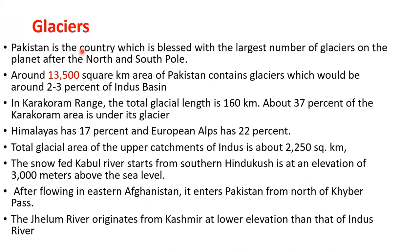The second major source is glaciers. Pakistan is one of the lucky countries that has more glaciers in the world after the North and South Poles. After those areas, Pakistan is the country which contains the largest glaciers. Around 1,300 to 3,500 square kilometers of Pakistan's area contains glaciers, and two to three percent of the water flowing into the Indus River comes directly from glaciers.